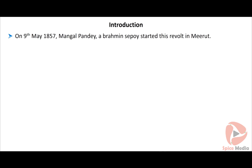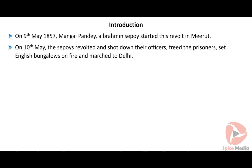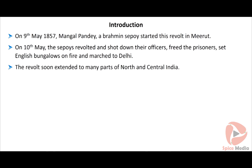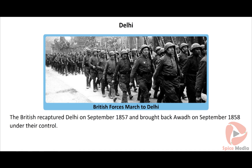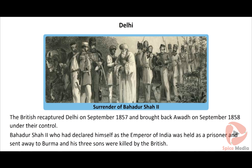On 9th May 1857, Mangal Pande, a Brahmin sepoy, started the revolt in Meerut by shooting a British officer. On 10th May, the sepoys revolted, shot down their officers, freed prisoners, set English bungalows on fire, and marched to Delhi. The revolt soon extended to many parts of north and central India. In September 1857, Delhi was recaptured by the British and Bahadur Shah was taken prisoner and sent to Rangoon in Burma, where he died in 1862.